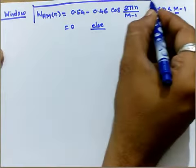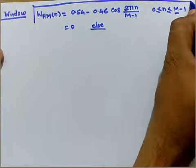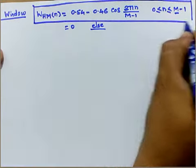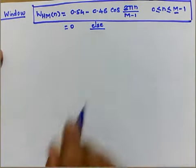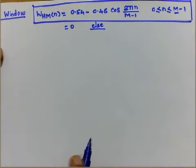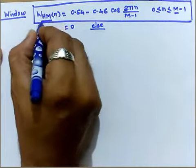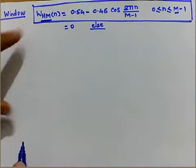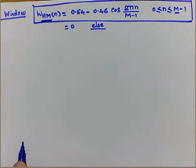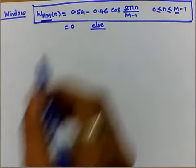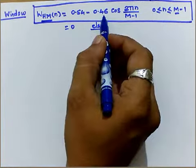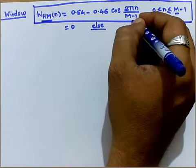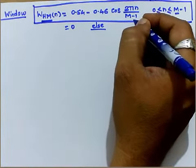Unlike the rectangular window function seen earlier, this is the Hamming window function: 0.54 - 0.46·cos(2πn / (M-1)).